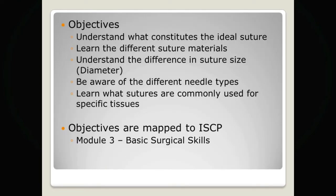To start, we will run through some learning objectives. The first is to understand what constitutes the ideal suture, then to learn the different types of suture material, to understand the difference in suture size, and then moving on to the different needle types, the different shapes and different needle tips, before finishing with what sutures are commonly used for specific tissues.